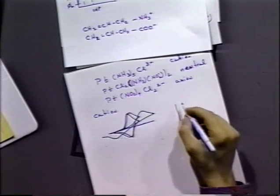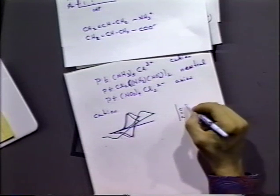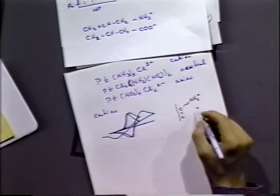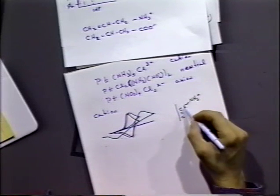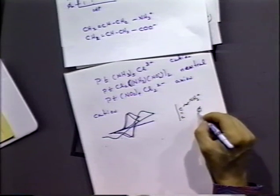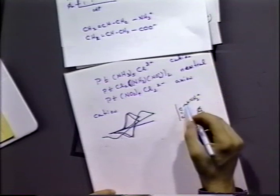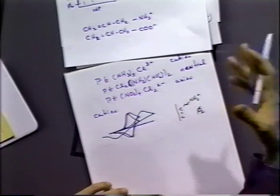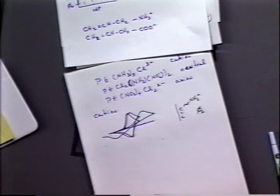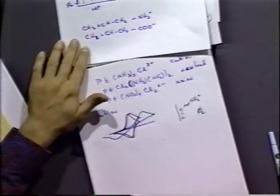By adjusting the number of chain links in the adsorbed molecule, phi-2 would be different, so he could adjust the chain length to get more or less phi-2 effect. And the opposite effect occurred when he used the anionic version. Other people have done similar experiments since then.